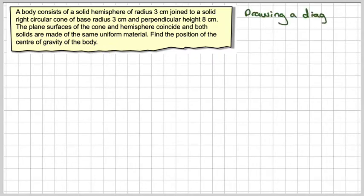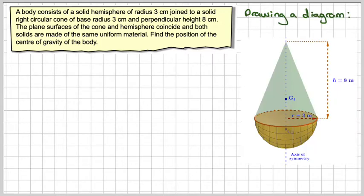So first of all, drawing a diagram. Here we have a cone joined with a hemisphere. We have the radius here of three centimeters, three meters sorry, and the height here of eight meters. I'll talk about g1 and g2 in a minute.